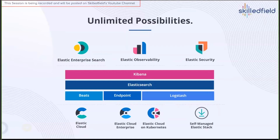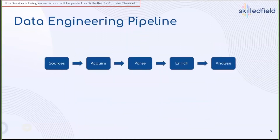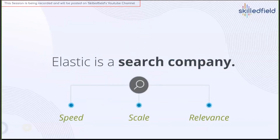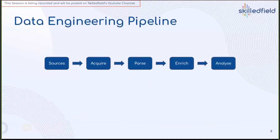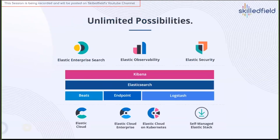When people talk about Elastic Stack, you need to understand that it provides a complete capability for an end-to-end data engineering pipeline. That's why when we say Elastic is a search company — yes, it's a search company that can do search and everything above that. The search is the basic function, which is why they classify themselves as a search company — because search is the core component of any data analytics capability. The stack consists of Beats, Endpoints, Logstash, Elasticsearch as the heart, and Kibana as the visualization tool.